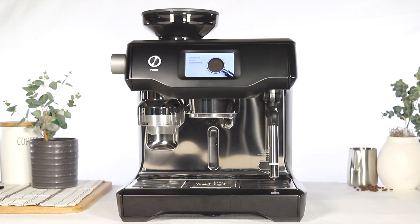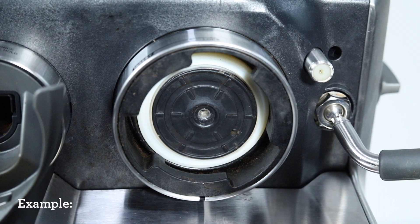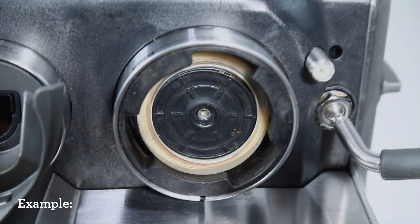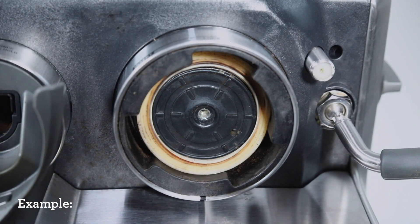In this video, we'll show you how to replace the 58mm steamring on your espresso machine. A steamring may need replacing over time due to normal wear and tear. A worn steamring may be indicated by a leaking or loose fitting portafilter.